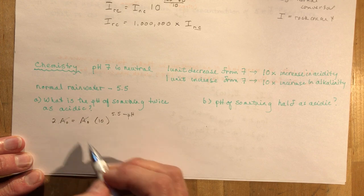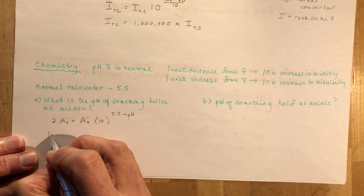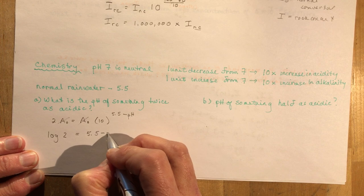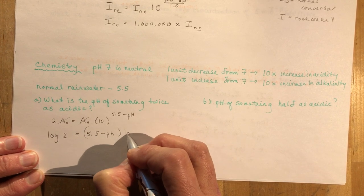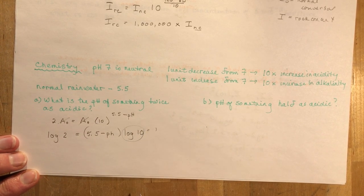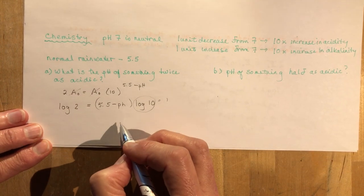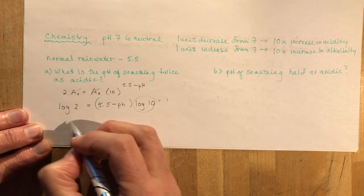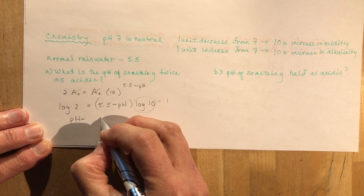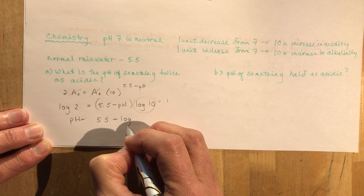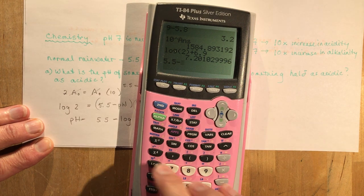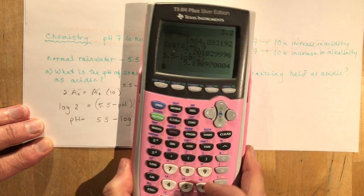We can cancel out these a sub zeros, and we're going to take the log of both sides. That's going to give me 5.5 minus pH times the log of 10. This is 1, so we don't have to do much about that. To find the pH, the pH is equal to 5.5 minus the log of 2. 5.5 minus the log of 2, and I get about 5.2.